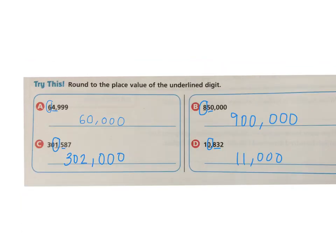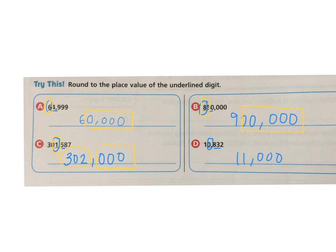Go ahead and check your answers. One thing I want you to notice is when we round: here we were rounding to the ten-thousands place, which means all the digits to the right — smaller than the ten-thousands place — turned into zeros, because we don't care about those. That's what makes it an estimate. For example, in question B, we're rounding to the hundred-thousands place, so all the place value positions smaller than the hundred-thousands, just put zeros. In question C, we're rounding to the thousands place — anything to the right of the thousands place, just fill in a zero. This is what makes it an estimate; it makes the numbers easier to think about in our heads, which is why we estimate in the first place.